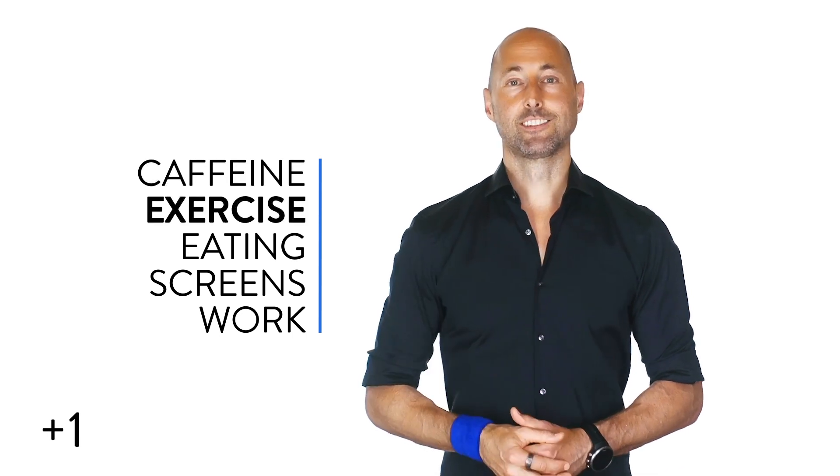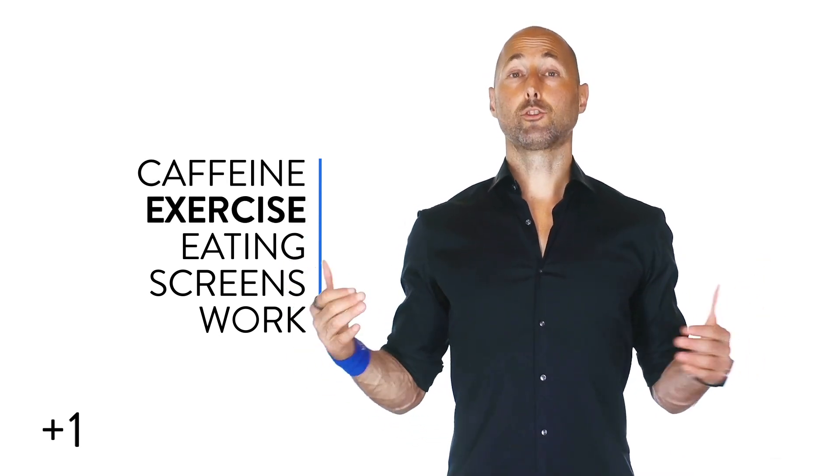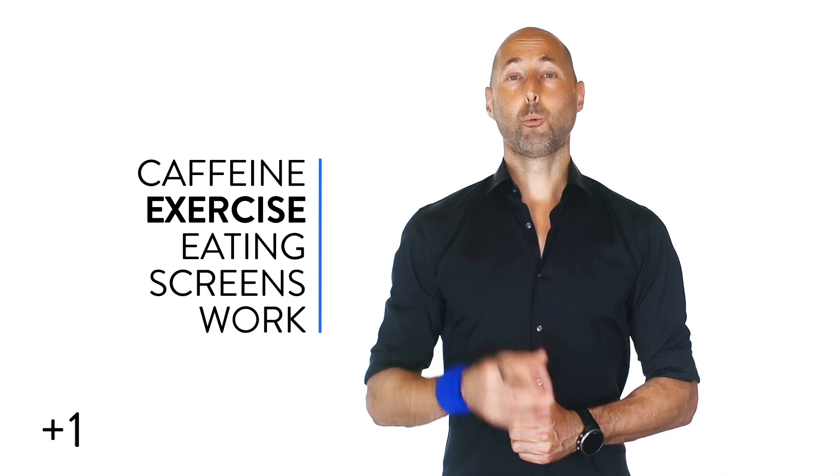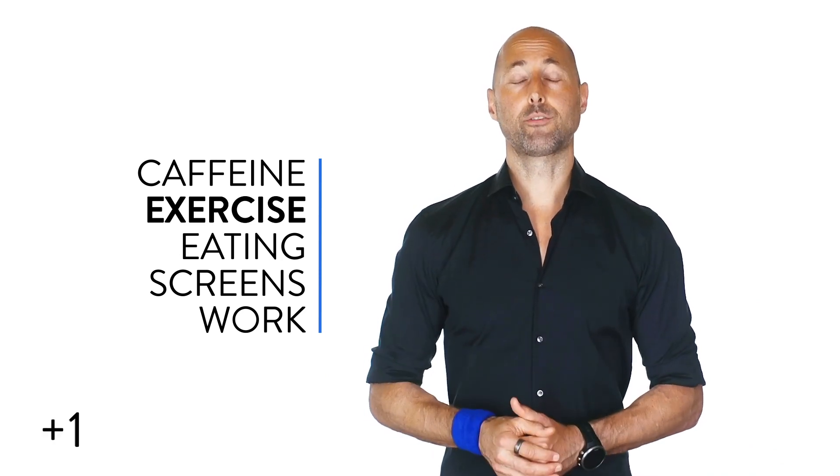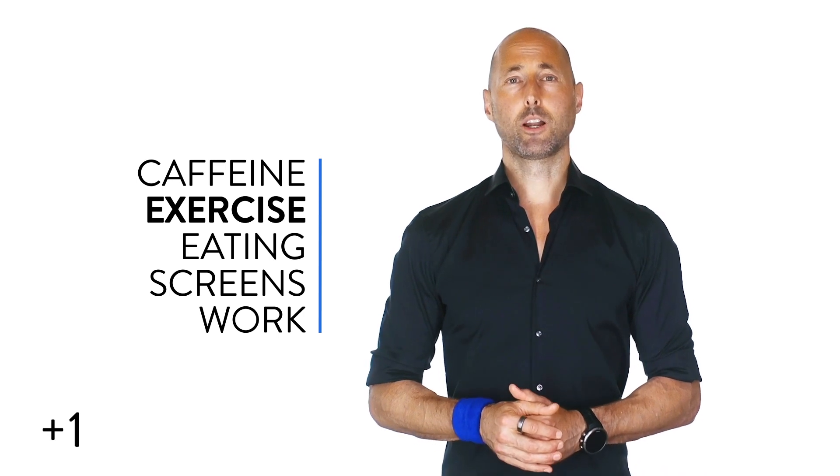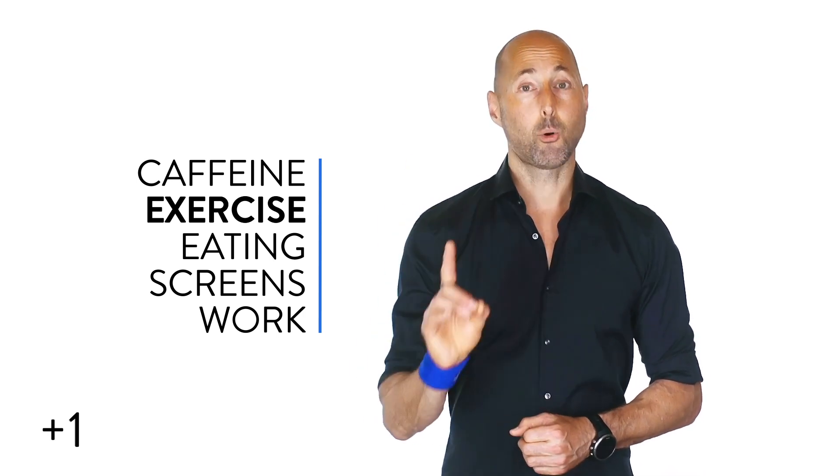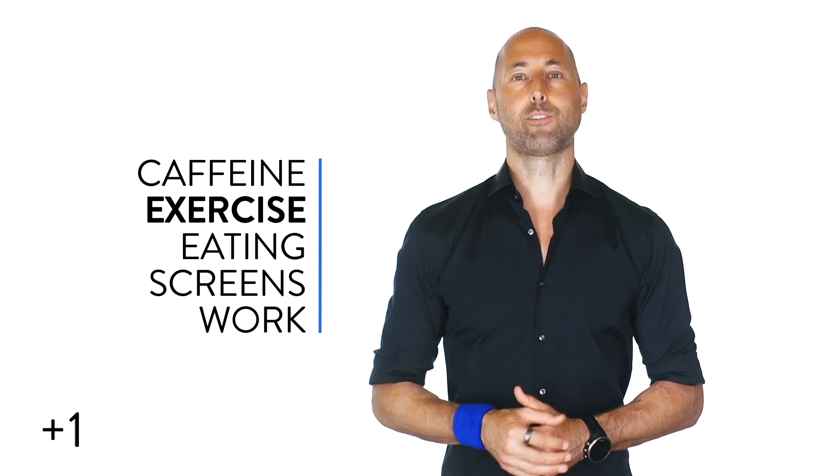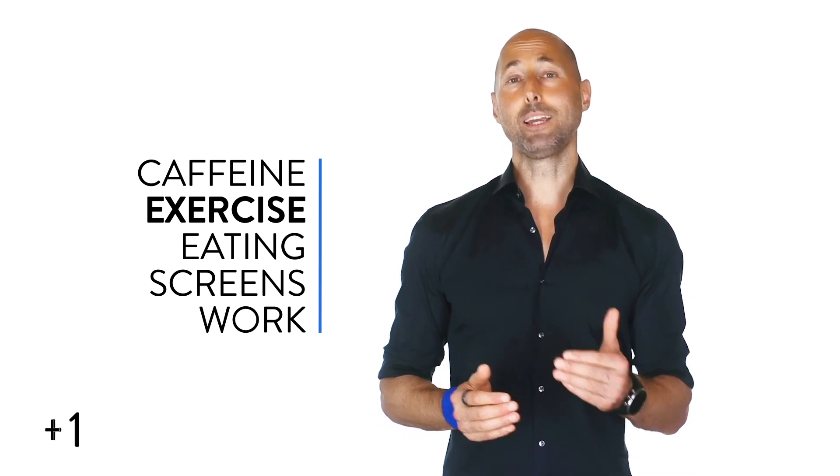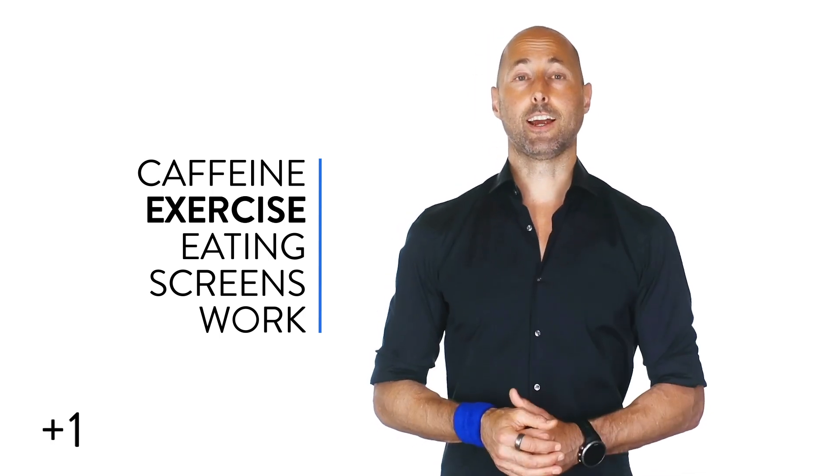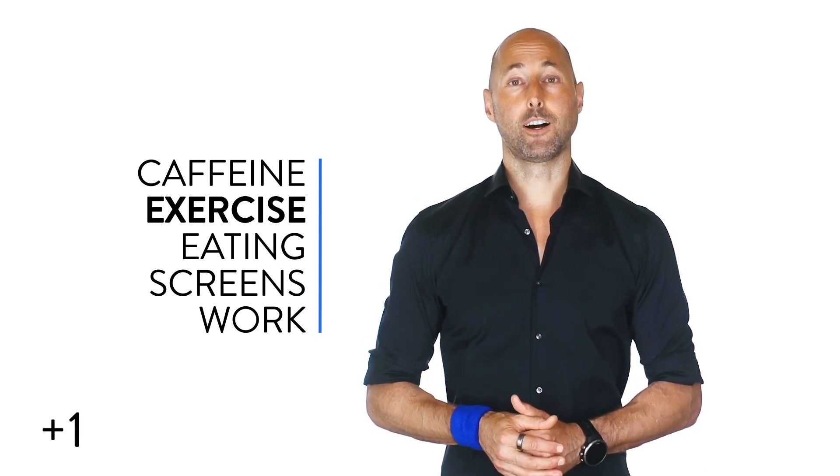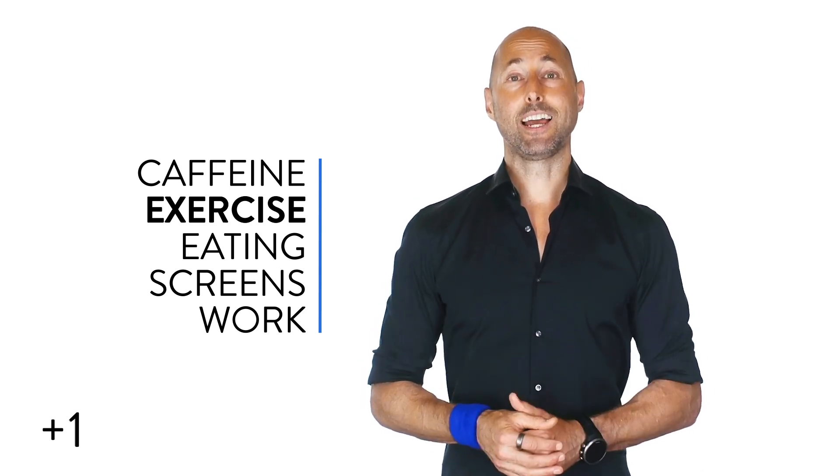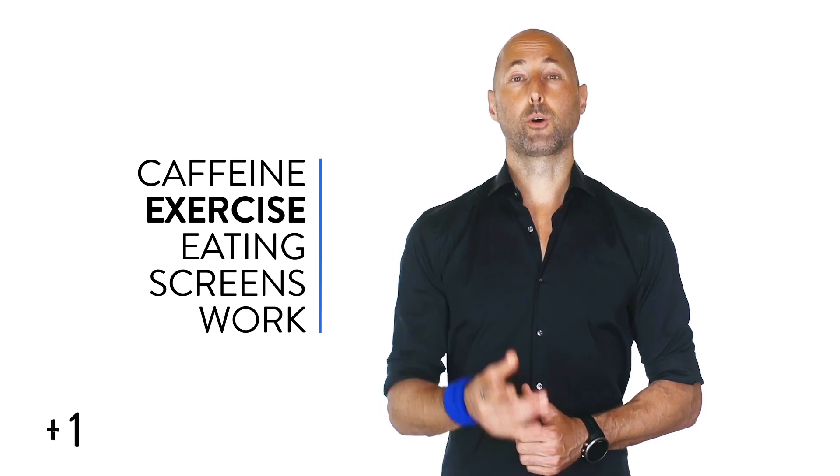Then we have exercise. Exercise is, of course, awesome. But if we work out too late, we drive our core temperature up, which makes it harder for us to get the deep, restorative sleep we're looking for. Plus, very importantly, we miss out on the 12-hour mood boost we could be getting if we worked out earlier in the day. So, we've got our exercise curfew. Work out at least three hours before you want to go to bed.